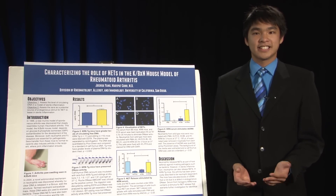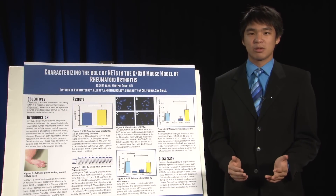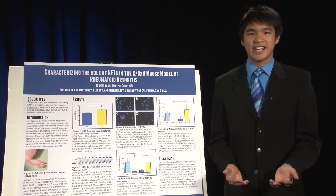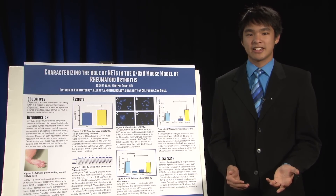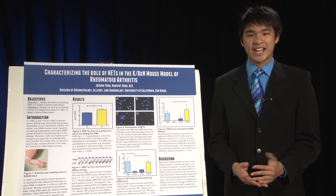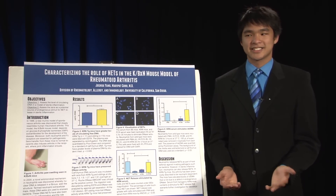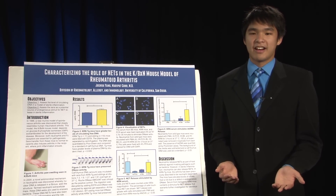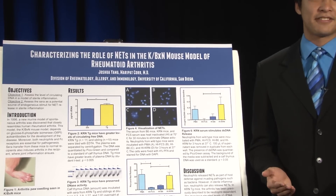Neutrophils are your first line of defense in an infection. One of the ways that neutrophils exert antimicrobial activity is through a process known as NETosis, whereby neutrophils extrude their nuclear DNA into a web-like structure known as a neutrophil extracellular trap, or NET. These NETs ensnare bacteria, helping to facilitate clearance. However, NETs have also been found in sterile inflammation, and their role has yet to be defined.